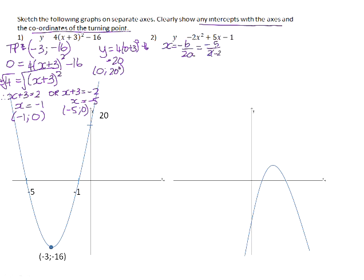So it will be -5 over 2 times -2, and that gives you an x-value of 5/4. If you now take 5/4 and you substitute it in place of x in the equation, you get the corresponding y-value to be 17/8.